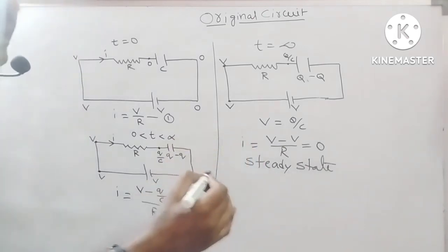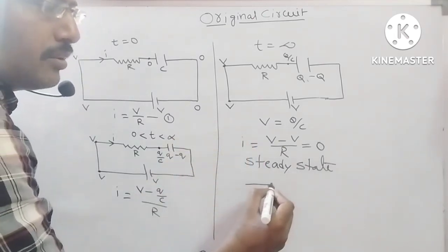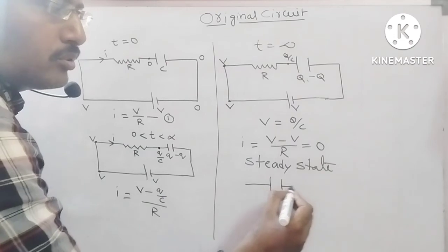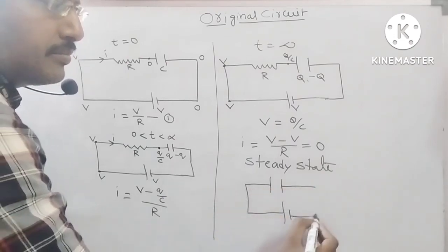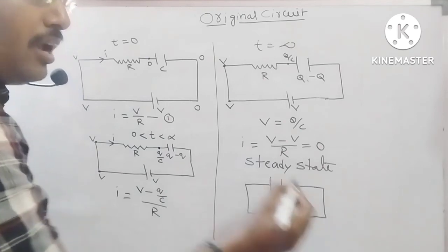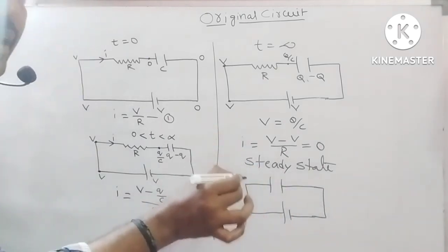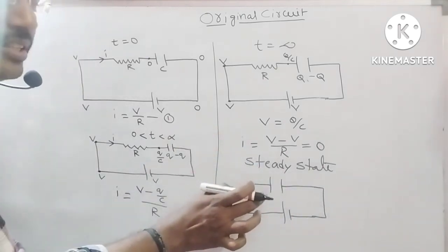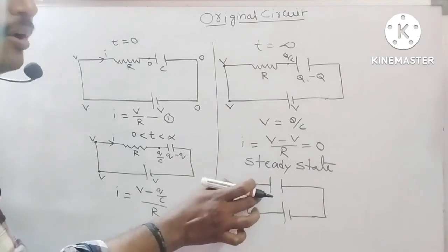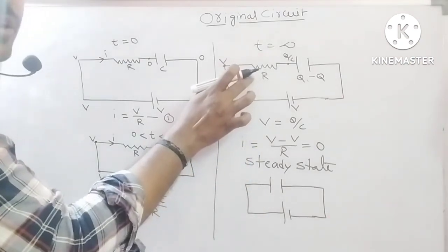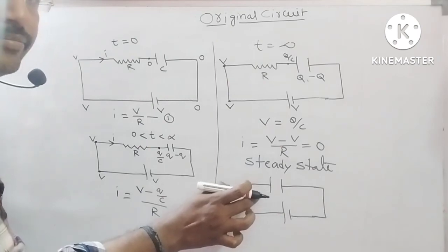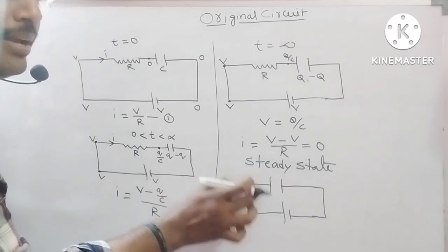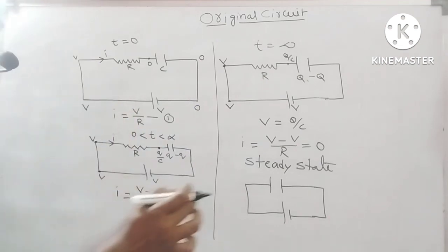So, here steady state diagram, most textbooks represent like this. Actually, this circuit has resistance, but no current flows through the circuit. So, most textbooks eliminate the resistance.